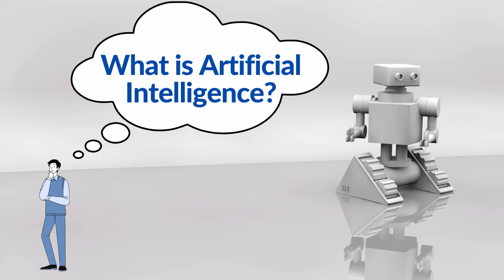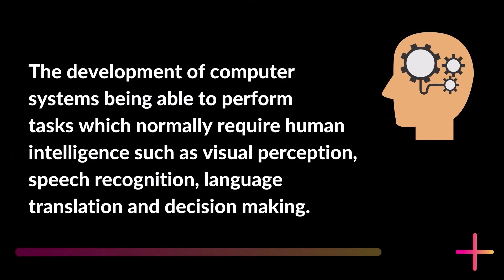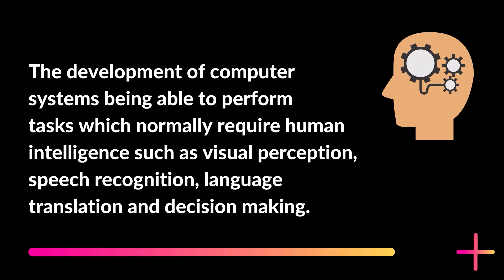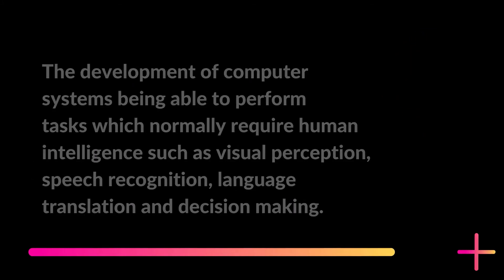What is artificial intelligence? Artificial intelligence can simply be stated as the development of computer systems being able to perform tasks which normally require human intelligence such as visual perception, speech recognition, language translation, and decision making.